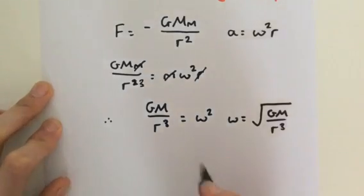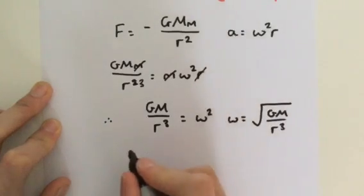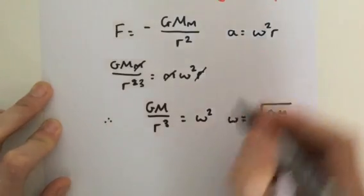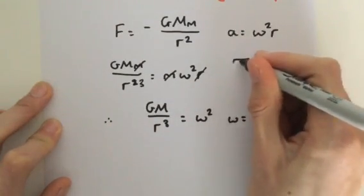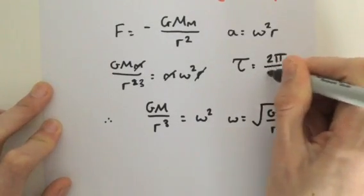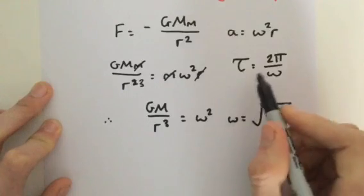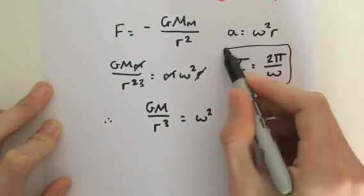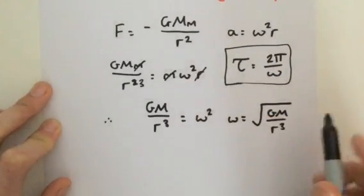So, we know that our orbital period τ is equal to 2π/ω. That is another simple mechanics equation.